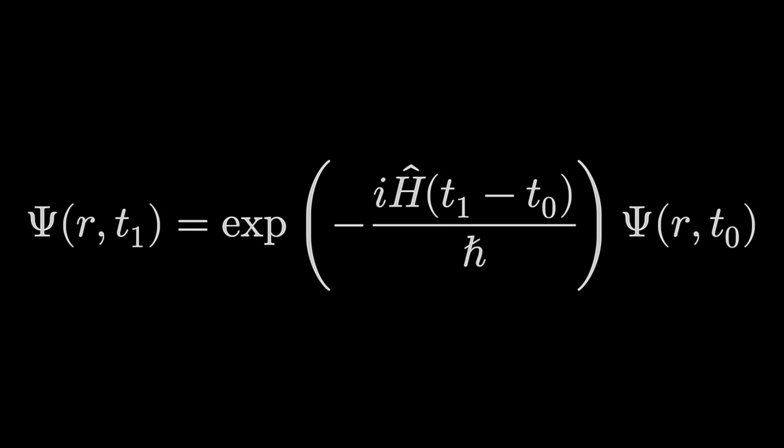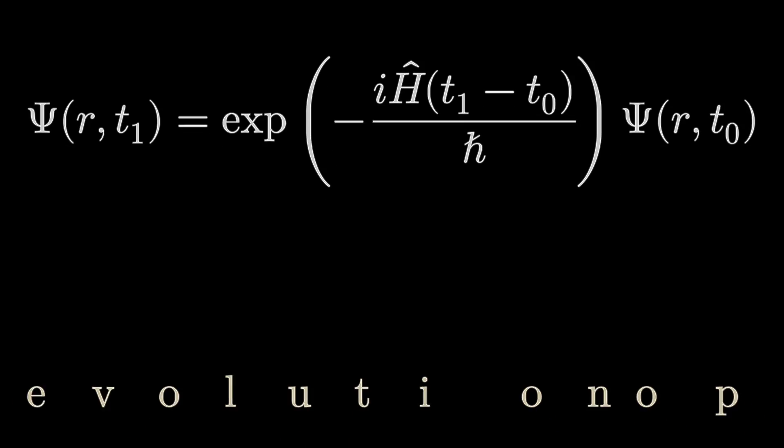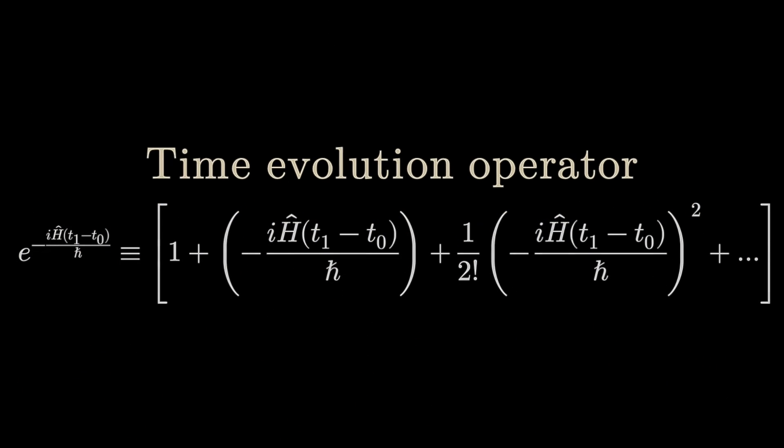Thus, we have found that for a given quantum mechanical wave function at time zero, we have a well-defined operator that will tell us about the state at time one. It is the time evolution operator. So, this operator is incredibly important, because this operator tells us how a quantum mechanical system evolves over time. And this is why the Hamiltonian is incredibly important in quantum mechanics.